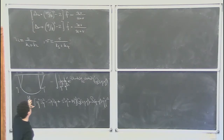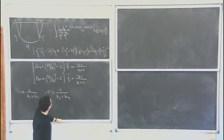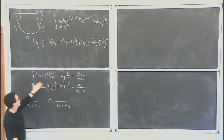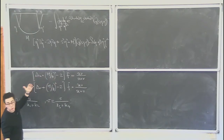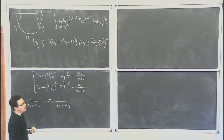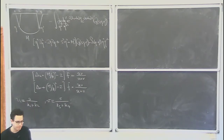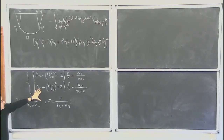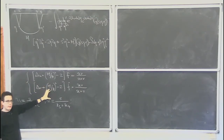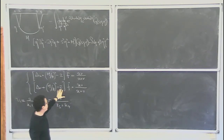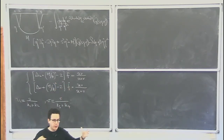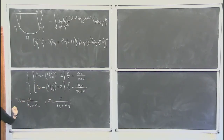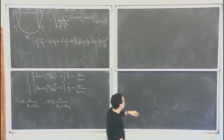The delta u equation tells you that acting on the left momenta effectively brings this vertex close to the other one, giving a contact interaction. Likewise, the delta v equation lets you do something similar on the right, moving that vertex and collapsing it to get the contact term. If you do things carefully, there is a factor of minus 2 here. Our task today is to understand this equation, describe its dynamics, and then explain how the story works for spinning particles.